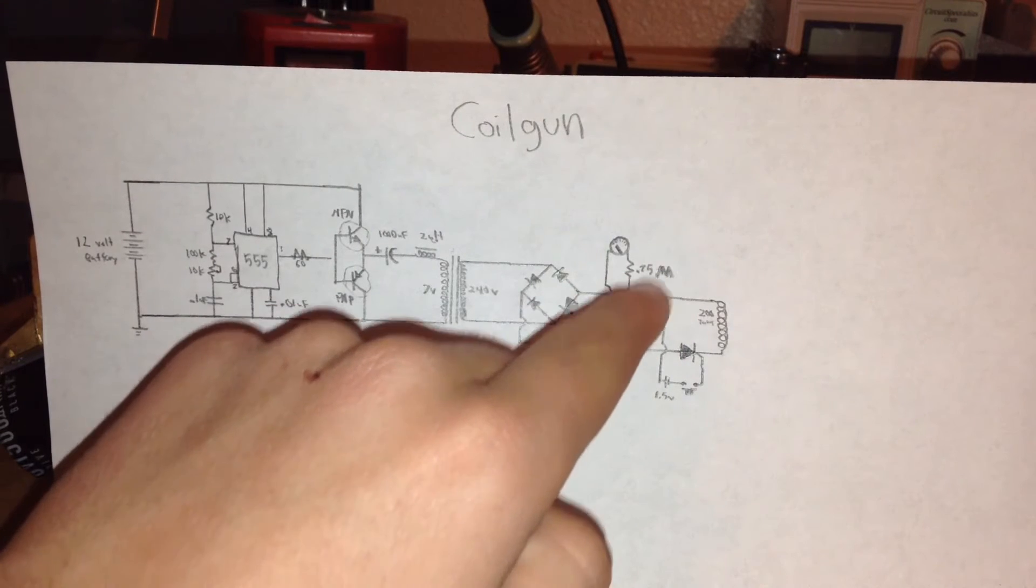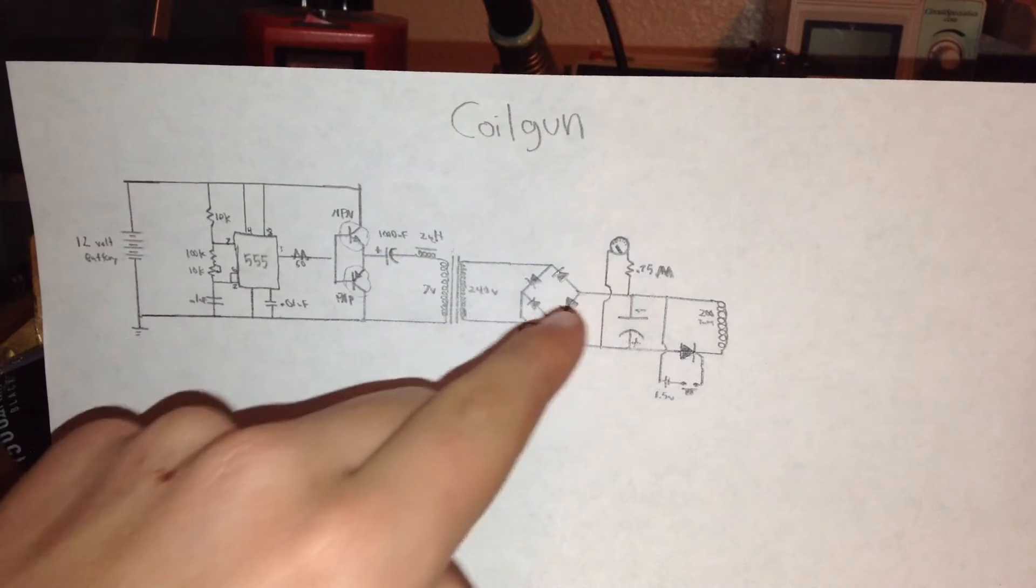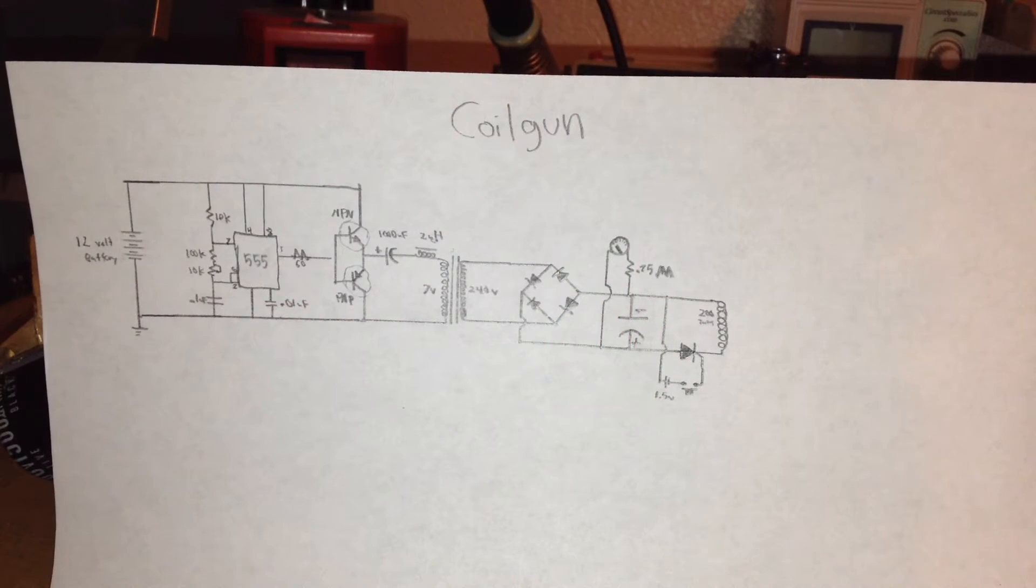The voltage goes through a 0.75 megaohm resistor before going through the analog meter, as to not short it out.